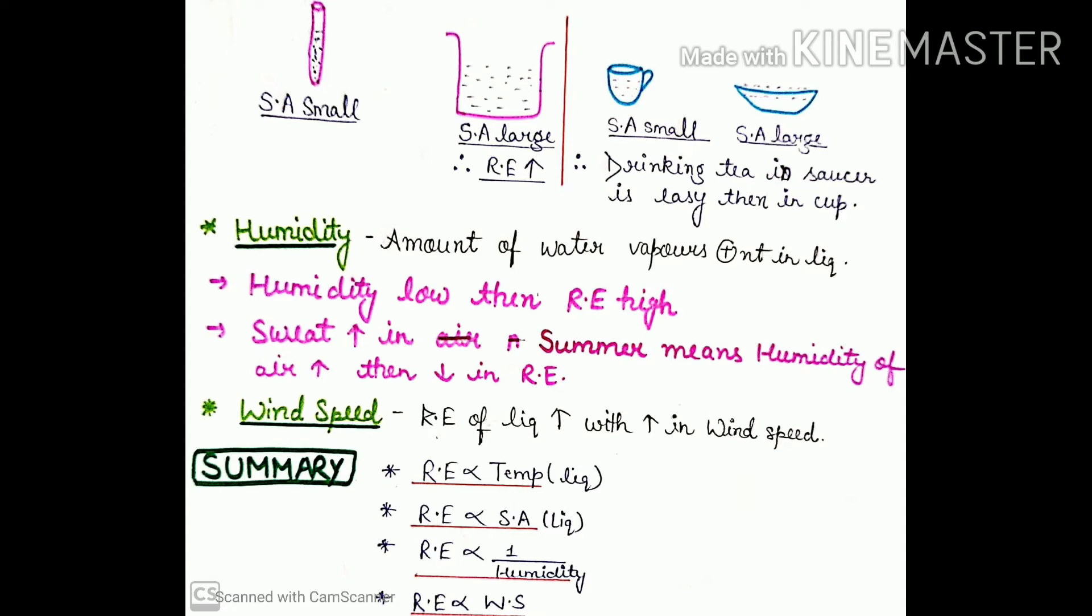Summary: Rate of evaporation is directly proportional to temperature of liquid, surface area of liquid, and wind speed. Rate of evaporation is inversely proportional to humidity. When humidity increases, meaning amount of water vapor present in environment increases, then rate of evaporation decreases.